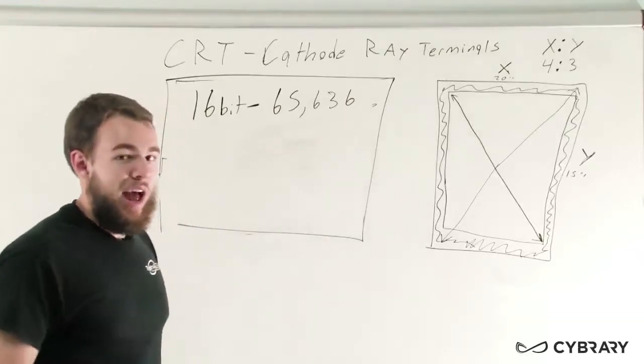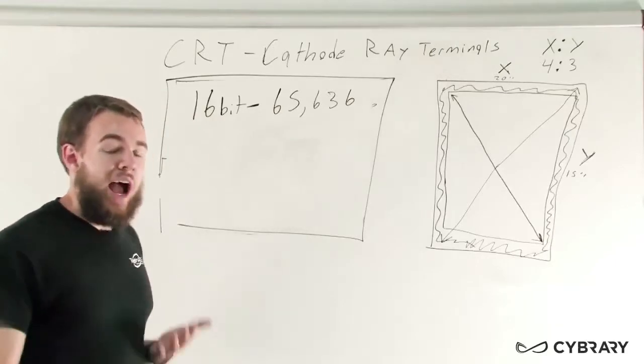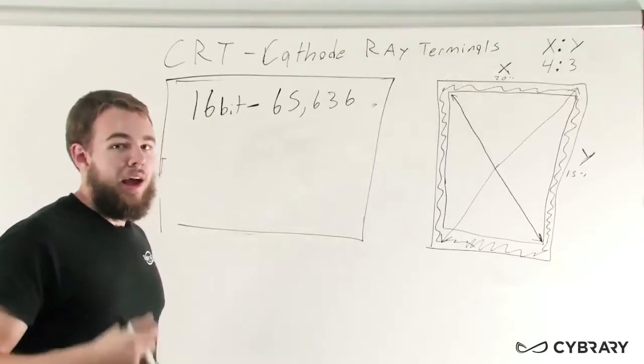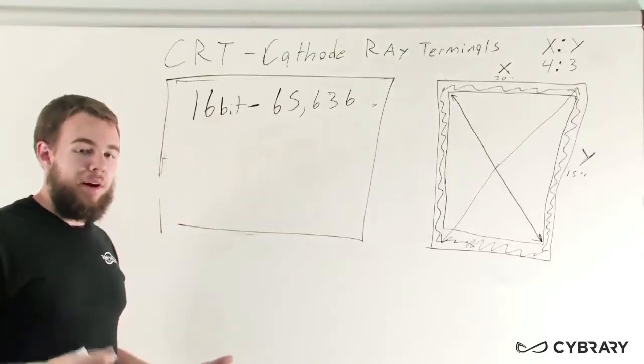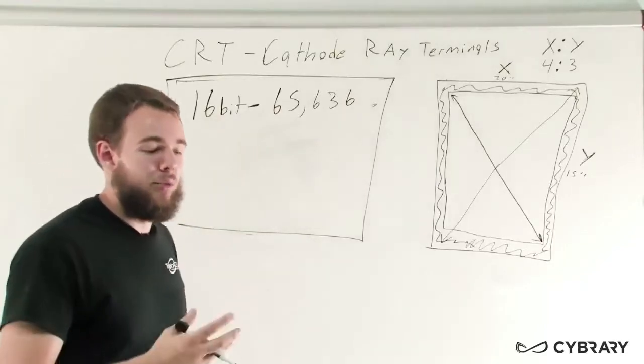So the better color depth we have, the more vibrant our colors can be, the more drastically different our colors can be. The amount of bits that are used to describe our pixel color help us to have a much more dynamic color range.